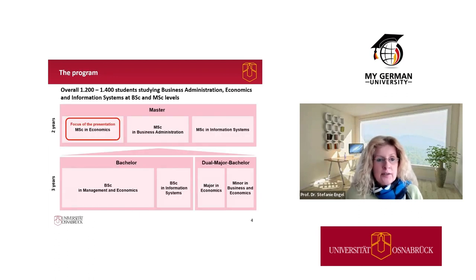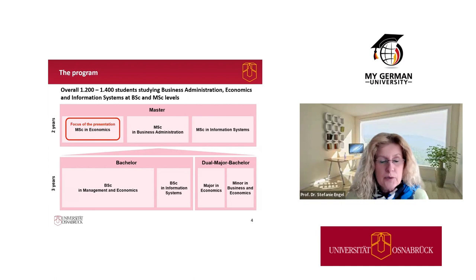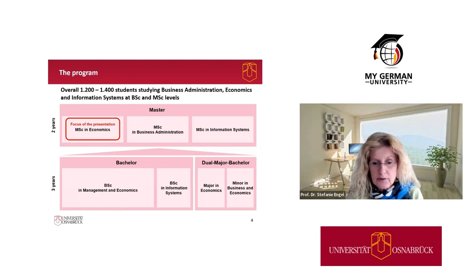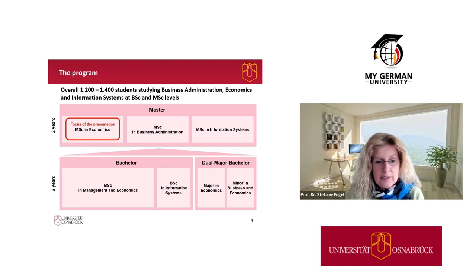At Osnabrück we have 1,200 to 1,400 students studying business administration, economics, and information systems at the bachelor and master level. You can see here all the various programs we have. In this presentation I will just tell you about the Master of Science in Economics.